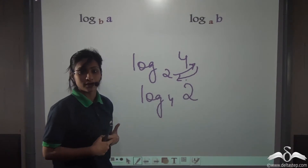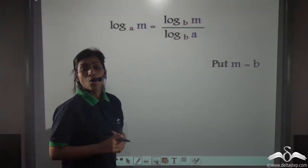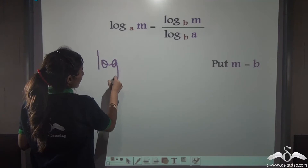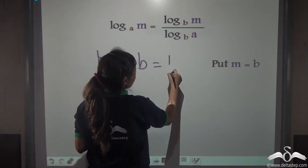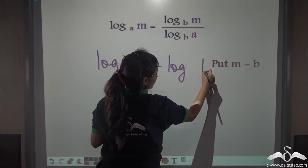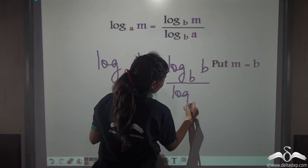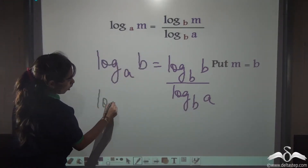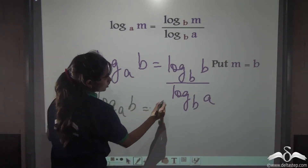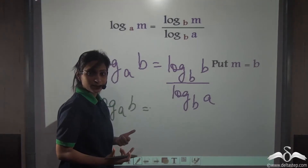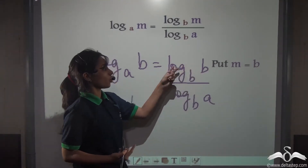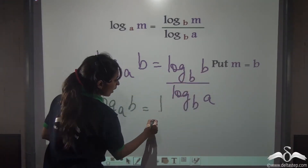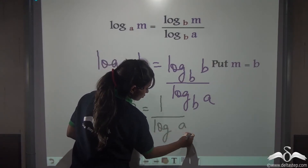But how did we get that? We will put M equal to B and see what happens. So, log B to the base A equals log B to the base B, divided by log A to the base B. Log B to the base B — what will be the answer? It will be 1. We know log B to the base B, or log A to the base A — if the base and the number are the same, the answer is always 1. So, we get 1 by log A to the base B.